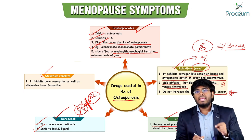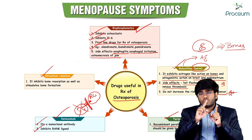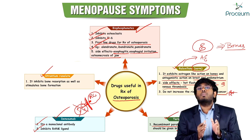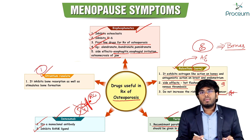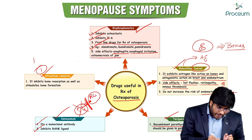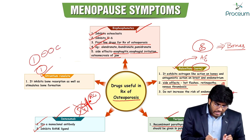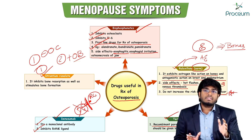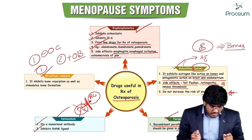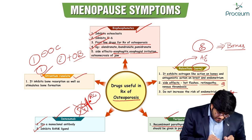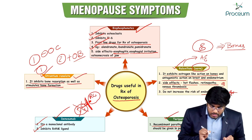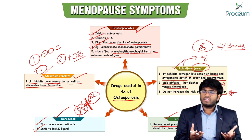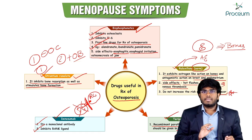Strontium ranelate is unique: it has a dual action. With one hand it inhibits osteoclasts and with the other it stimulates osteoblasts, thus both inhibiting bone resorption and promoting bone formation. It is the one drug that performs both actions simultaneously. Calcium supplements can also be used alongside these agents for osteoporosis.